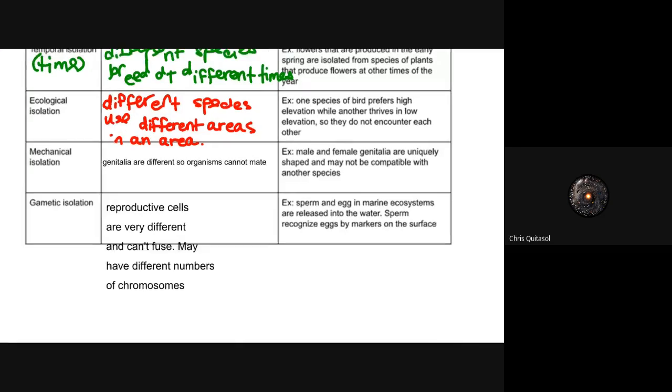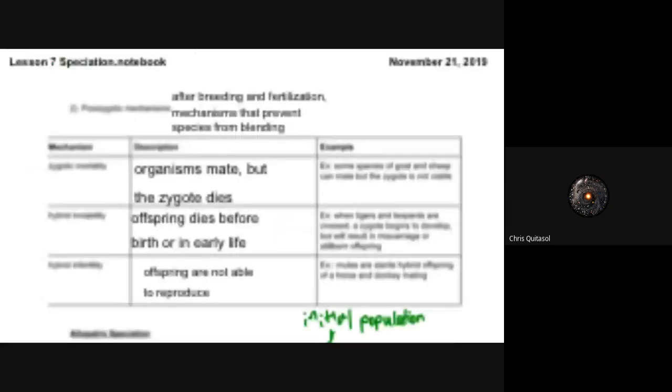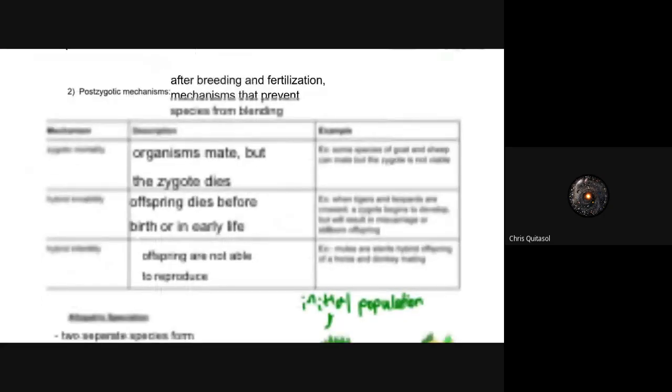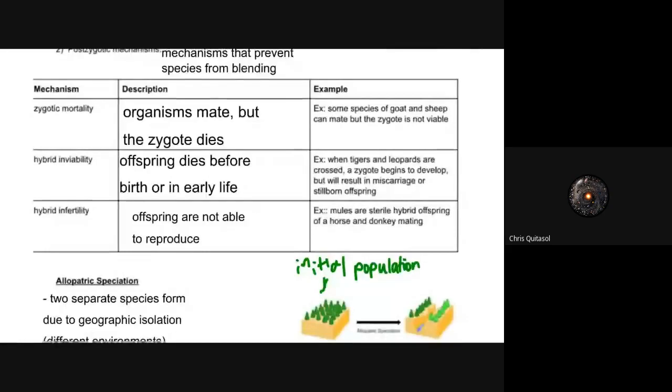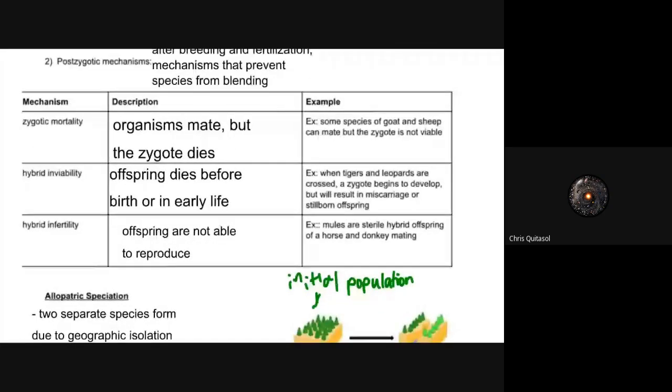The second method is called post-zygotic mechanisms. These happen after fertilization. For whatever reason, some similar species can successfully mate, but the post-zygotic mechanisms come into play.